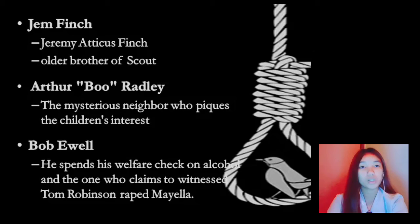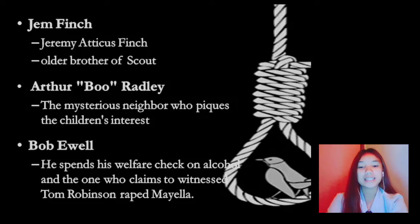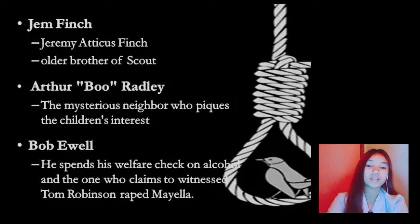The next character is Arthur Boo Radley, a recluse who never sets foot outside his house. Boo dominates the imaginations of Jem, Scout, and Dill. He is a powerful symbol of goodness shrouded in an initial air of creepiness, leaving little presents for Scout and Jem and emerging at an opportune moment to save the children. He is an intelligent child emotionally damaged by his cruel father. Boo provides an example of the threat that evil poses to innocence and goodness. He is one of the novel's mockingbirds, a good person harmed by the evil of mankind.